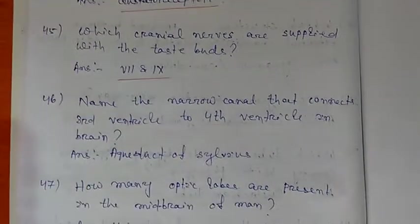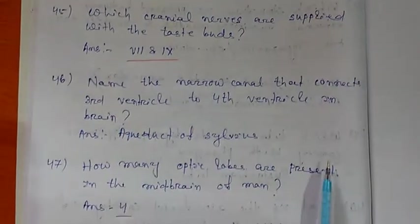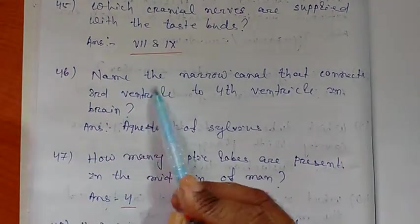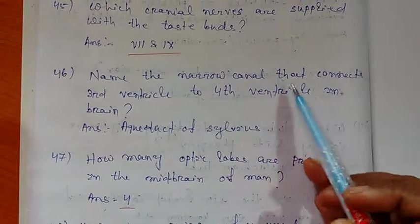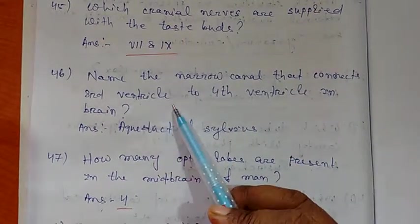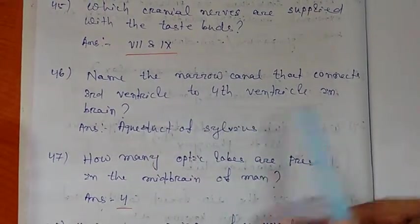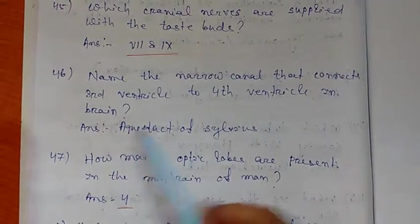Next, question number 46: Name the narrow canal that connects third ventricle to fourth ventricle in brain of human.